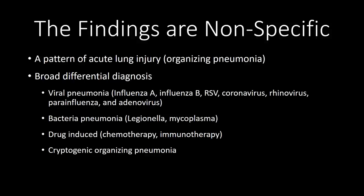The findings are not specific to COVID-19. These cases have a pattern on CT consistent with acute lung injury or organizing pneumonia. There is a broad differential diagnosis that includes multiple different types of viral pneumonia, some atypical bacterial pneumonias, drug-induced acute lung injury, and cryptogenic organizing pneumonia, which is an idiopathic form of primary organizing pneumonia.